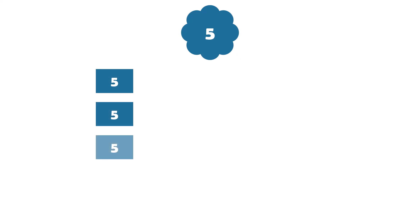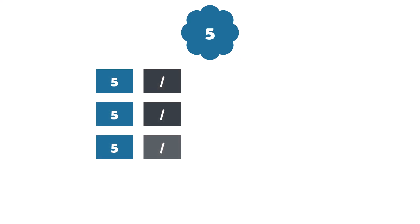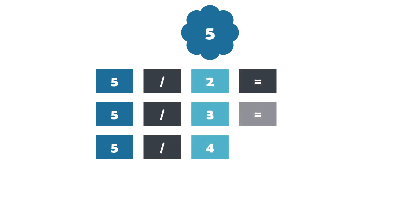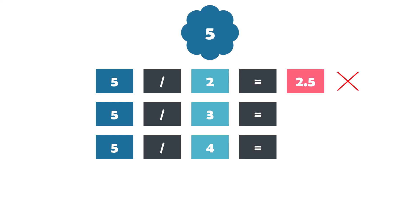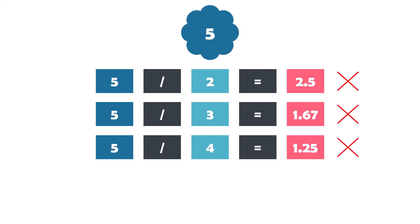For example, the number 5. We have to check if we can divide this number evenly by all numbers between 2 and this number: 2, 3, and 4. Dividing 5 by 2 returns 2.5 — not divided evenly. Dividing by 3 returns 1.67 — also not evenly. And dividing by 4 returns 1.25 — also not evenly. This means the number 5 is a prime number, because it can only be divided evenly by 1 and itself.